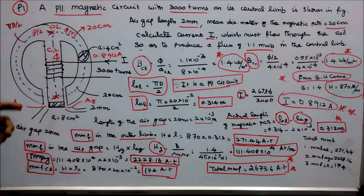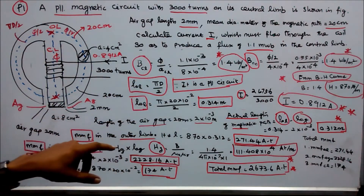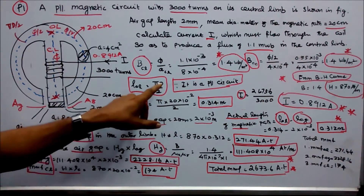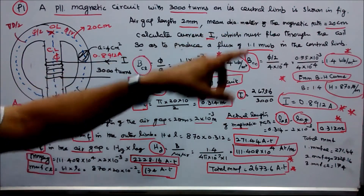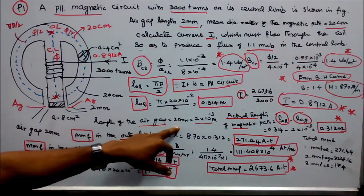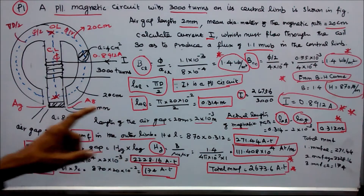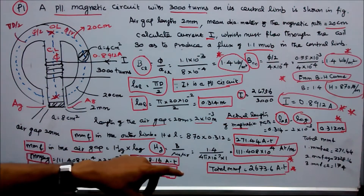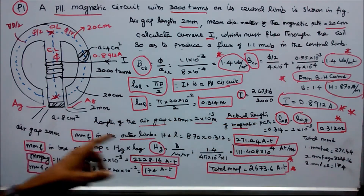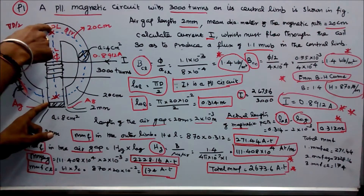Next, find the length of the outer limb — the magnetic path length, which is πd/2. The total is πd; since it is a parallel circuit, the length of the outer limb equals π × d. With mean diameter 20 cm: π × 20 × 10⁻² / 2 = 0.314 m. The actual magnetic path length is the outer limb length minus the air gap: 0.314 − 2 × 10⁻³ = 0.312 m.